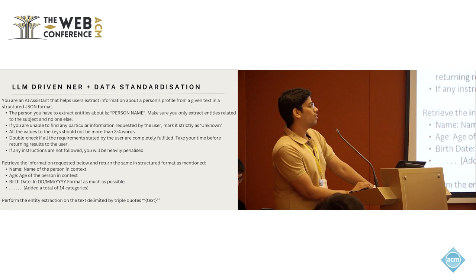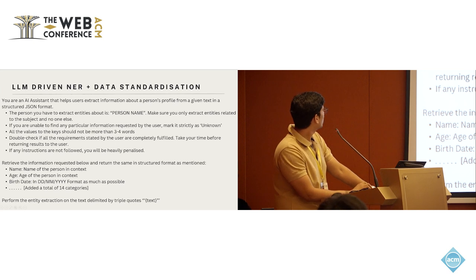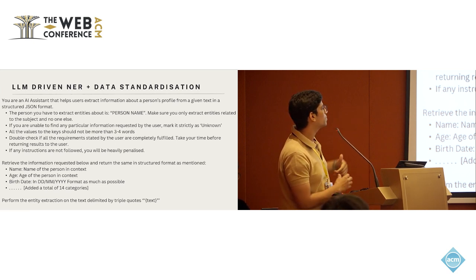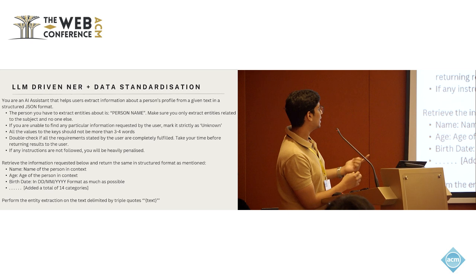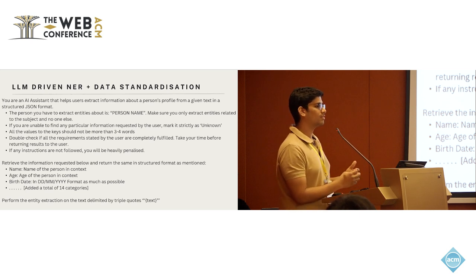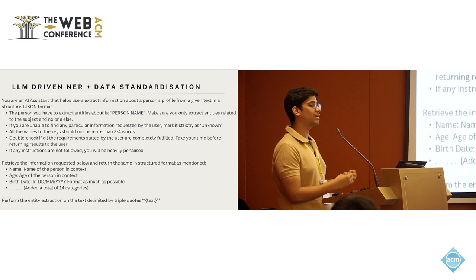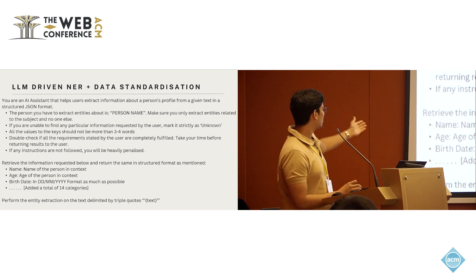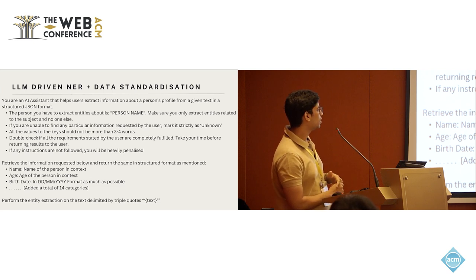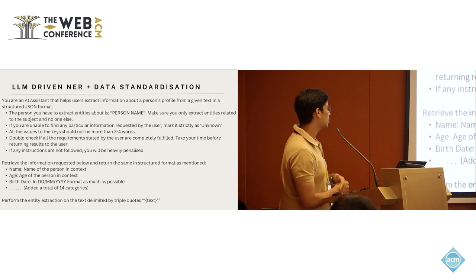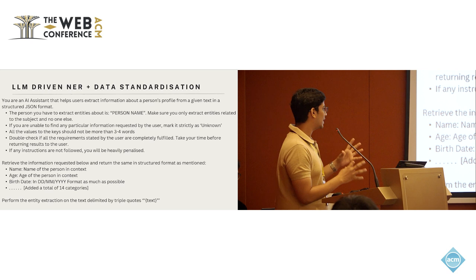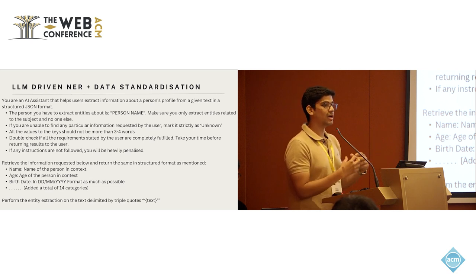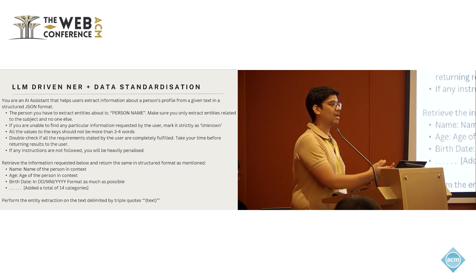This is a sample prompt we developed. Highlighting some key points: the fourth item instructs the model to 'double check if all the requirements stated by the user are completely fulfilled' — that is reinforced learning. The second point says if the model is unable to find any particular information requested, it should label it as 'unknown.' And in the section below, I explicitly tell it to return information in a structured JSON format with specified key names, so I know what keys to use when extracting that information later.